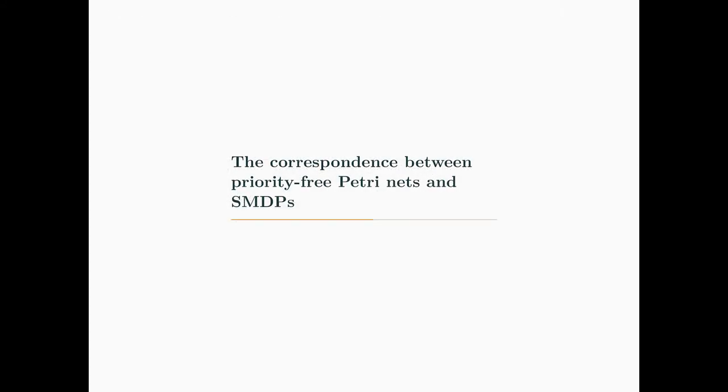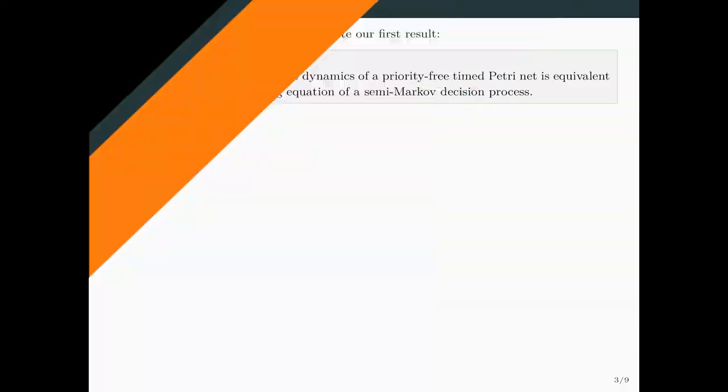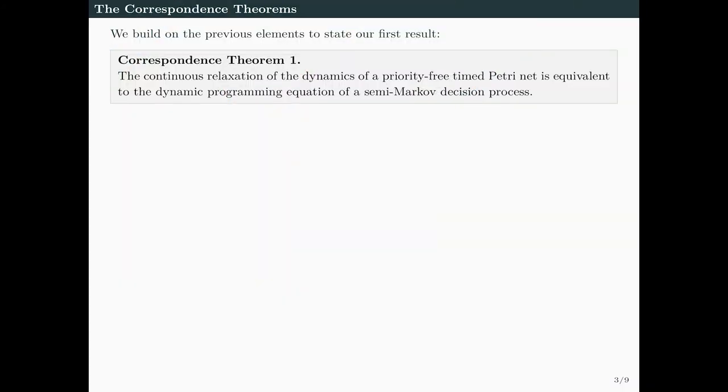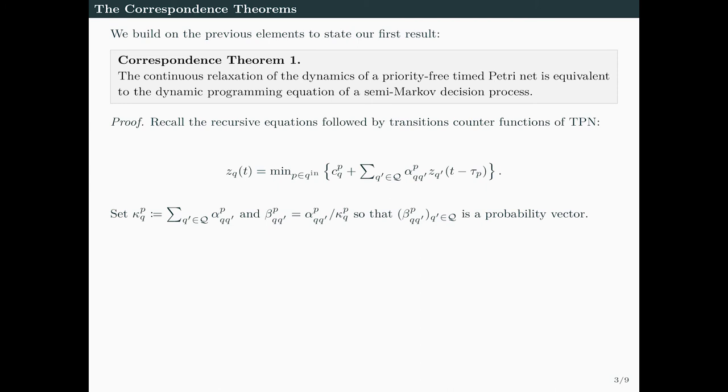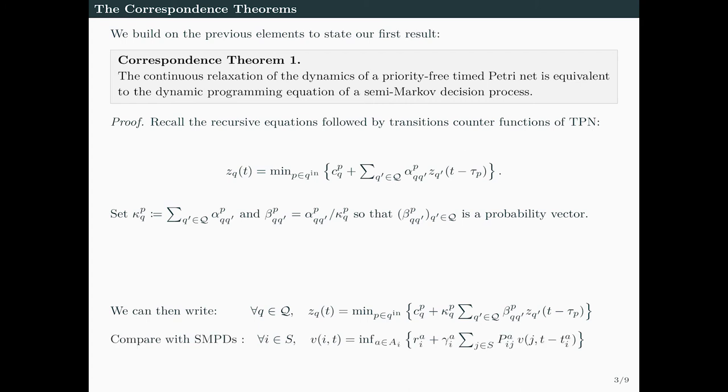We can also define the average cost as the vector g, where g(i) is the least possible average cost per unit time incurred over infinite horizon, starting in state i. The main difference compared with the value function is this 1/t which takes the average. Having recalled these results on SMDPs, we are ready to state that the continuous relaxation of the dynamics of priority-free time Petri nets is equivalent to the dynamic programming equation of an SMDP.